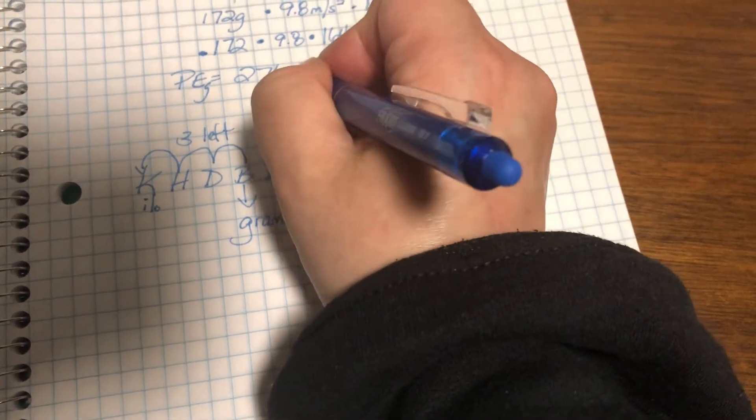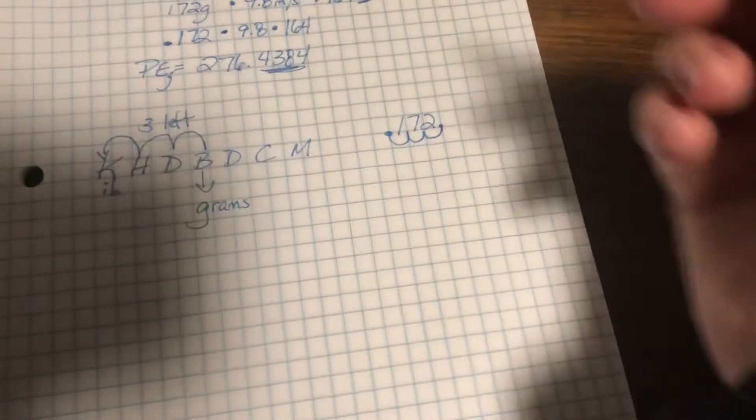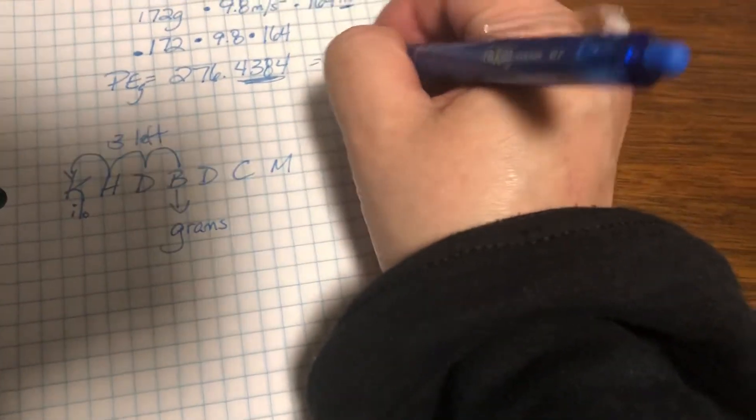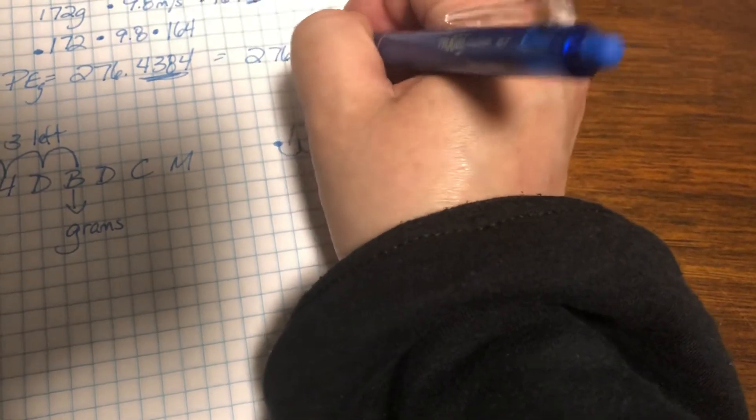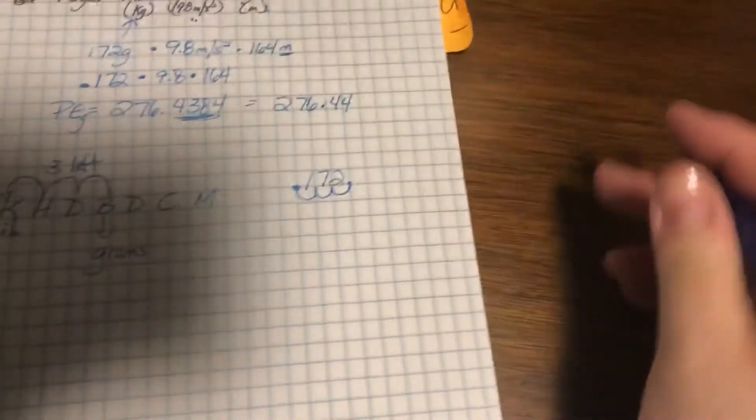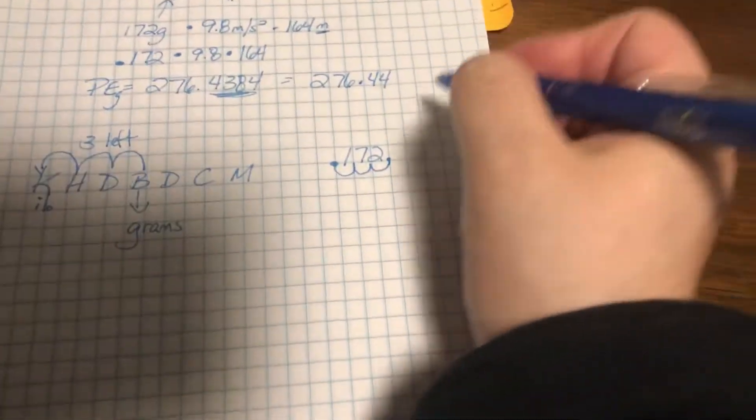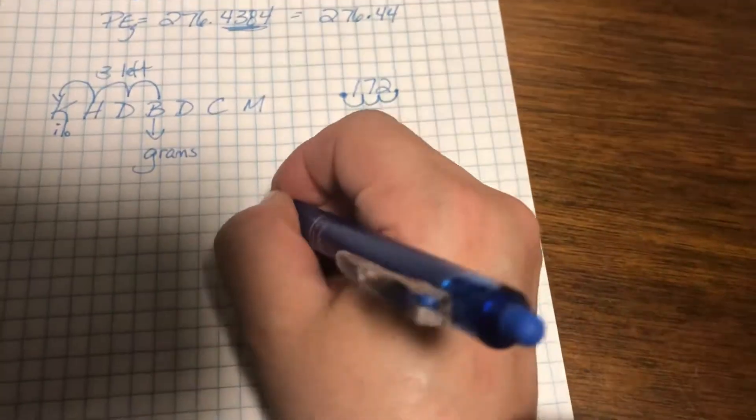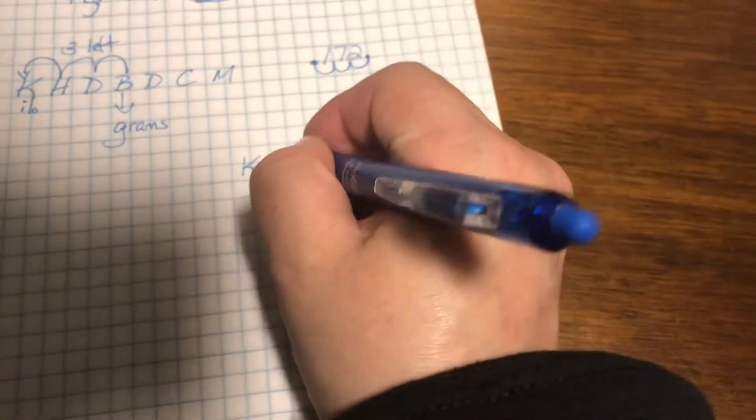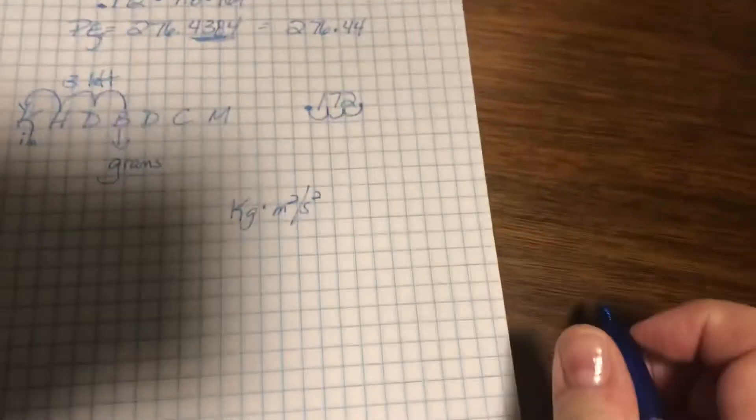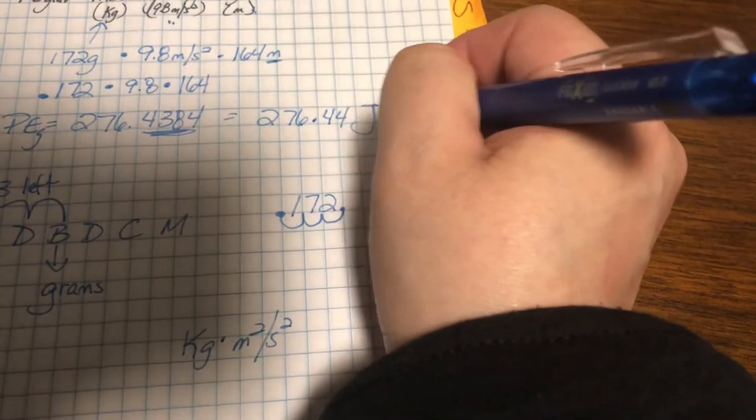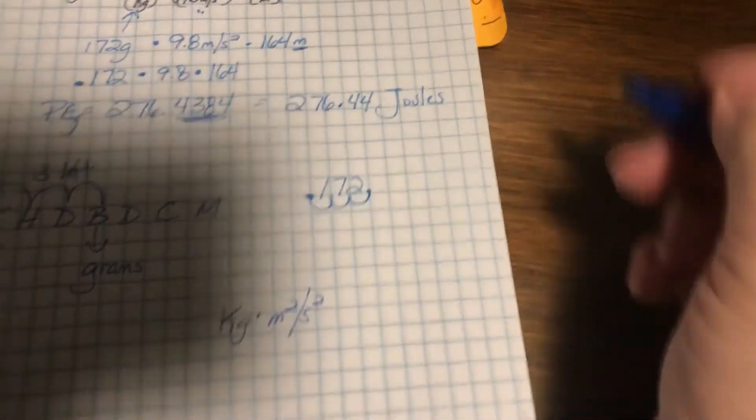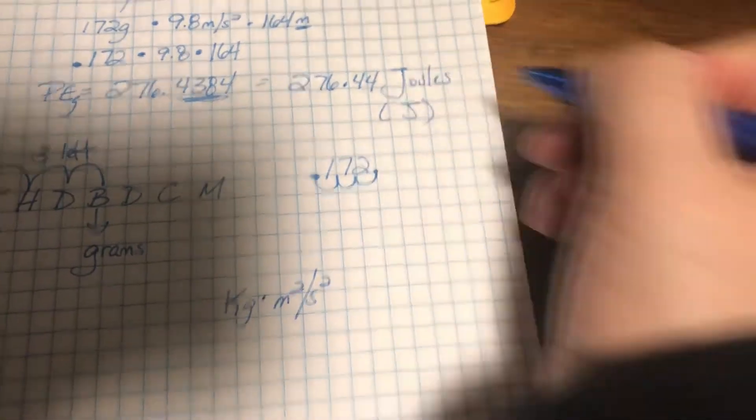Now we don't need so many numbers here. So we can simply have PE due to gravity equals 276.44. Now, instead of writing kilograms times meters squared per second squared, we simply use joules, or you can use the capital J.